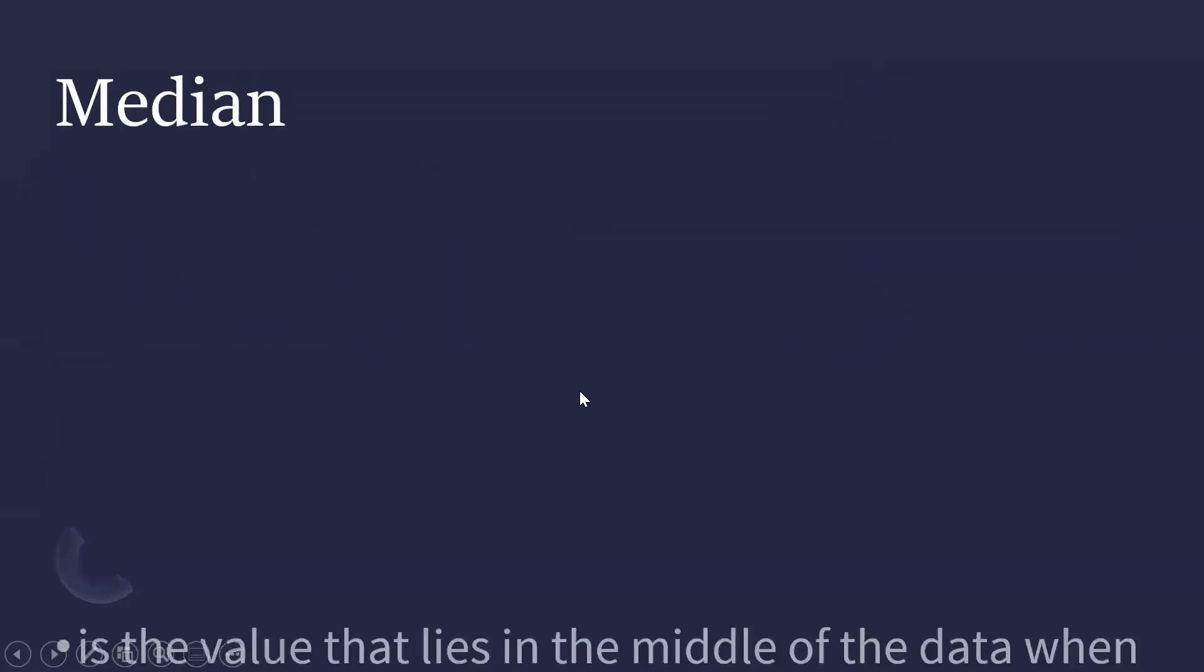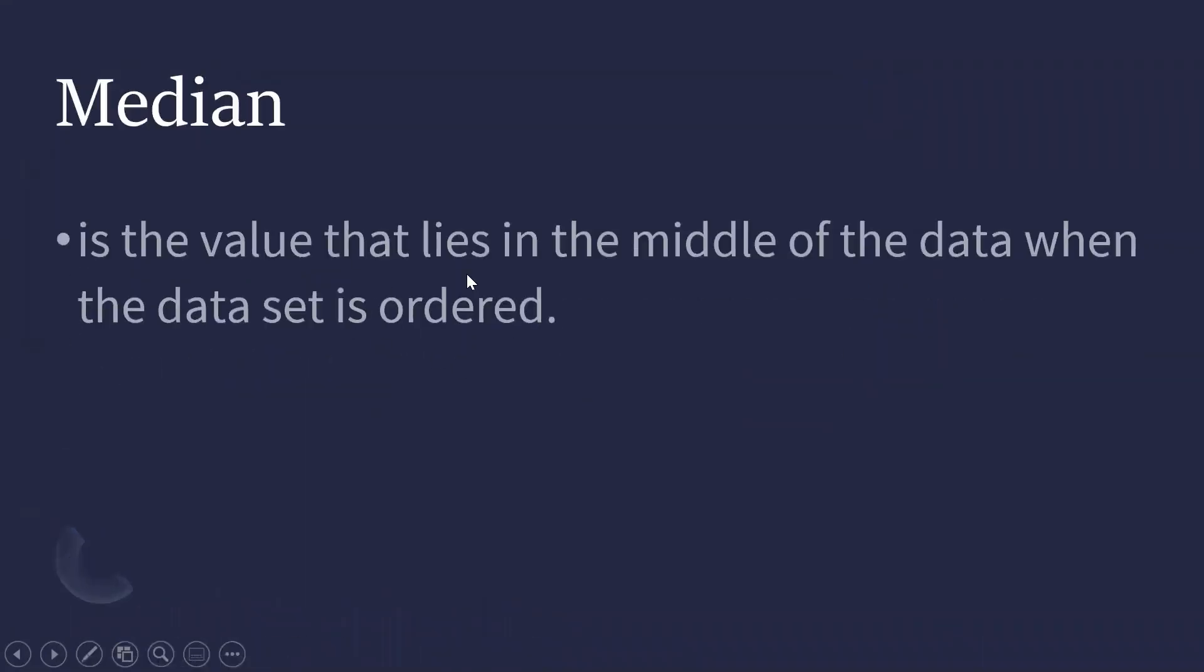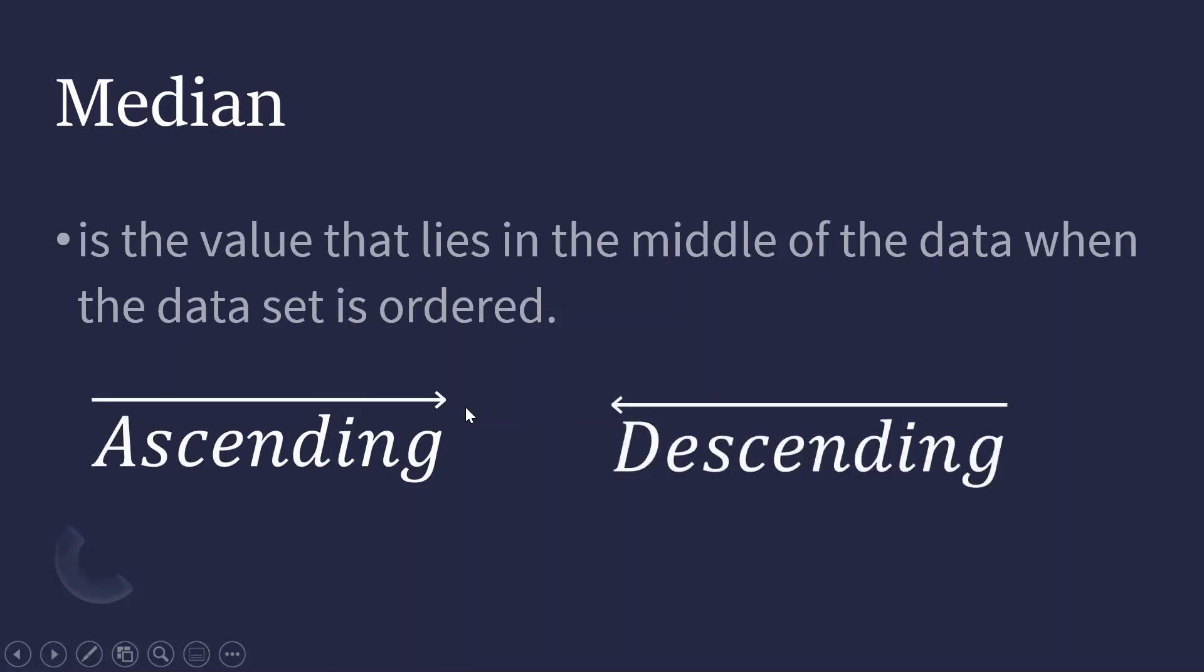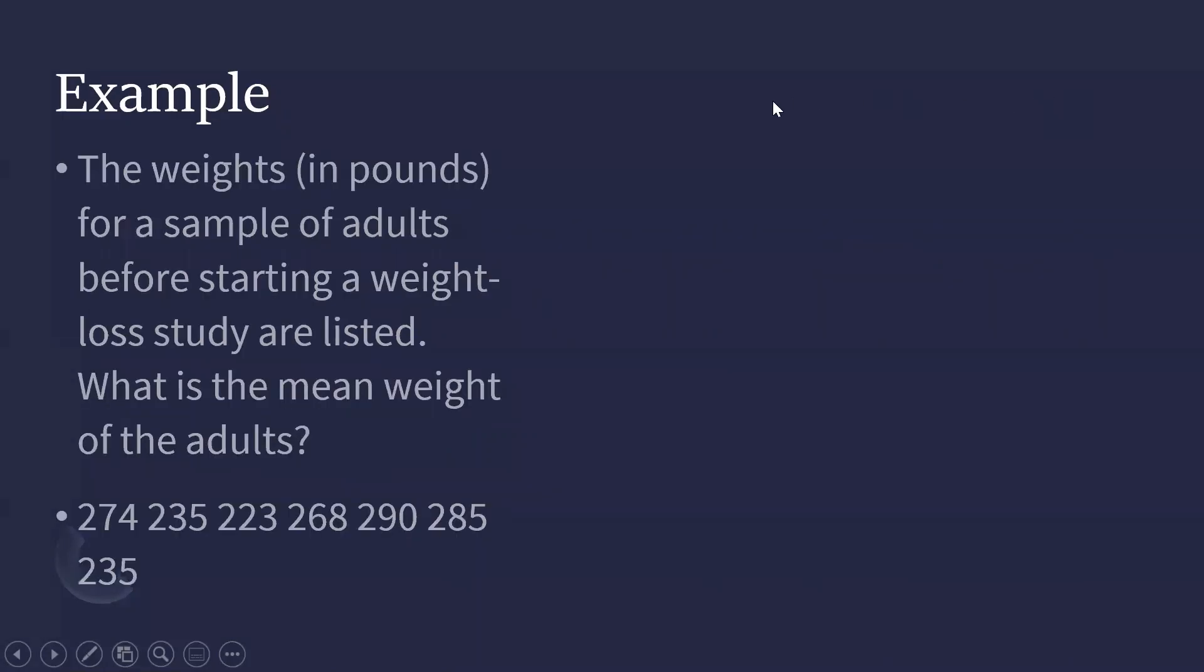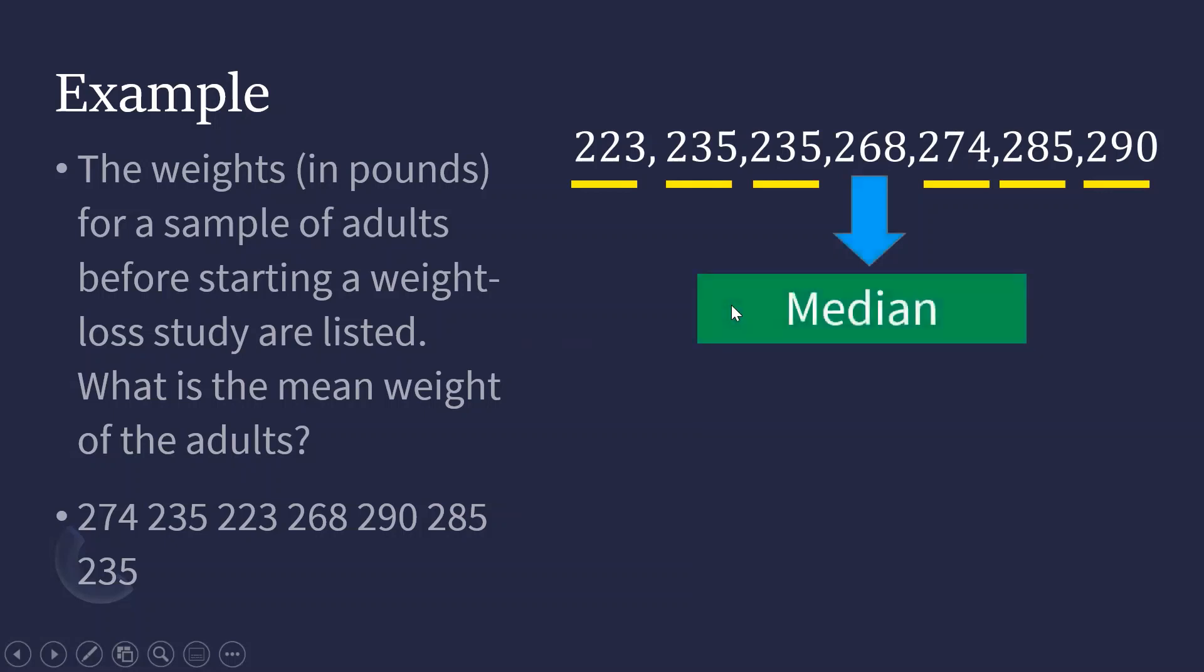When you say median, it is the value that lies in the middle of the data when the data set is ordered. We can order this in either ascending or descending order. Let us find the median of example number one. Arrange this in ascending order and find the median value. The median value is 268.